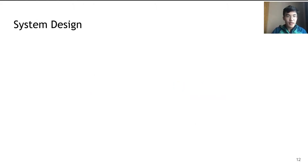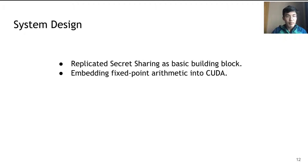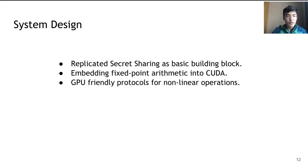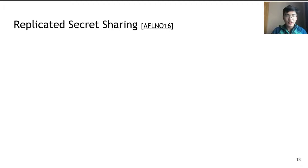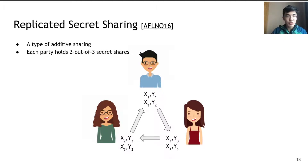Our system design can be summarized into three components. First, we use replicated secret sharing as our basic building block. Replicated secret sharing is a type of additive secret sharing where multiple parties each hold their own secret shares and send them to neighboring parties. After replicated secret sharing, each party holds a 2-out-of-3 secret share. Replicated secret sharing supports addition and multiplication and is an efficient building block for three-party computation.